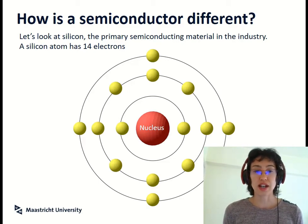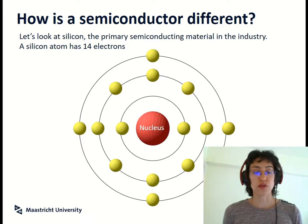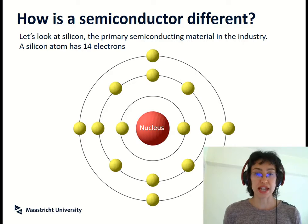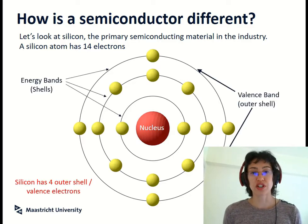You can see here in our model of the atom, you have your nucleus at the center and your 14 electrons orbiting the nucleus. You've got two in the first shell, then eight, and then four in the outer shell.